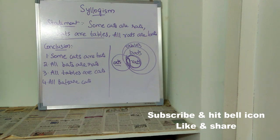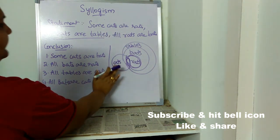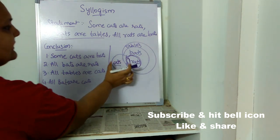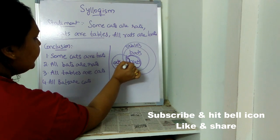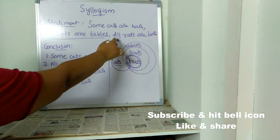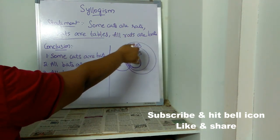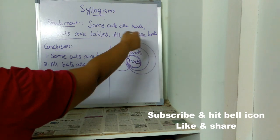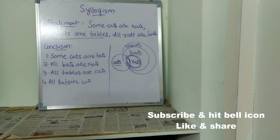For some cats are rats, I've drawn a common overlapping point between cats and bats, because some cats are rats. All rats are bats — I've covered the entire rats circle inside bats. Next, all bats are tables — I've covered bats inside tables. We've simply converted the given statements into a pictorial format so that it's easy for us to solve the problem.